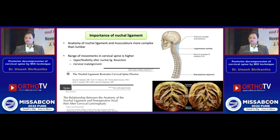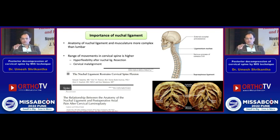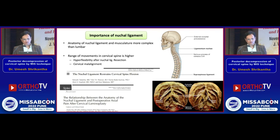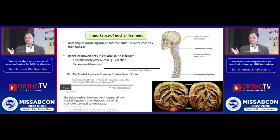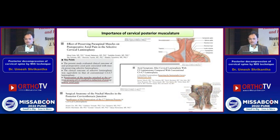The anatomy of the posterior cervical musculature and the nuchal ligament is quite important. There are several studies which have shown the importance, just like in the lumbar spine, of the midline ligament structures — that is the nuchal ligament, which has two different components, the areolar and the lamellar portions — and the role it plays in restricting cervical spine flexion. The importance of preserving muscular attachments especially to the C2 and C7 spinous processes has been shown in several studies to result in significantly less postoperative axial pain.